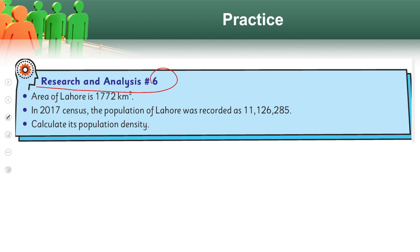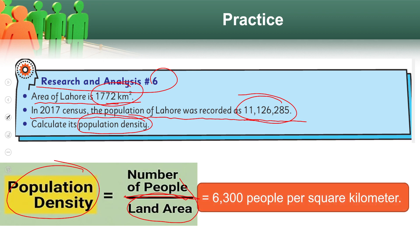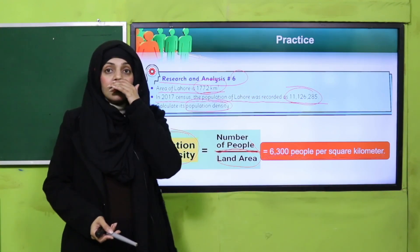For practice, you will do research and analysis number six. Area of Lahore is 1772 square kilometers. In the 2017 census, the population of Lahore was recorded as 1 crore 11,26,285. Ab aapne Lahore ki population density record karni hai — ke Lahore mein per square kilometer kitne log rehte hain. The formula is: population density = number of people divided by land area. Per square kilometer Lahore mein 6,300 log rehte hain. That's quite a lot of people — so Lahore is a densely populated area.